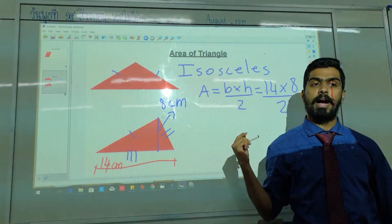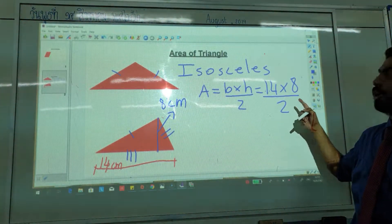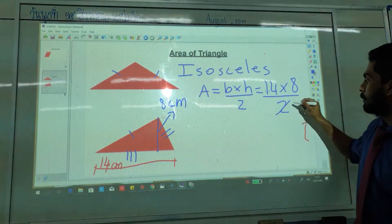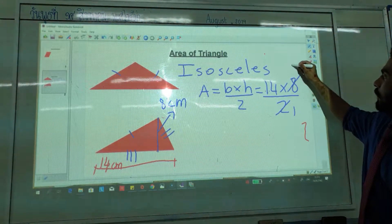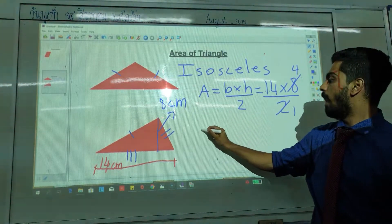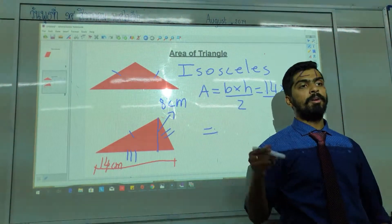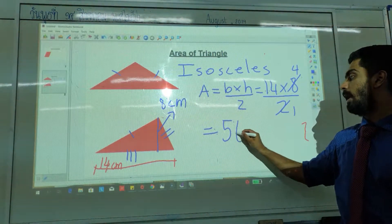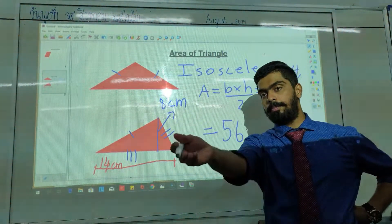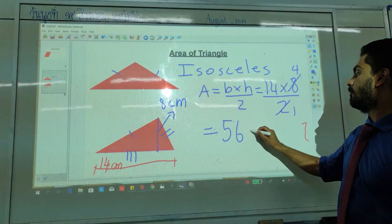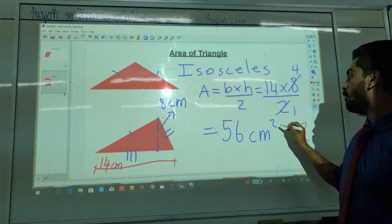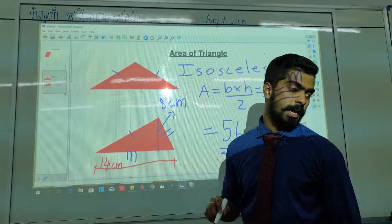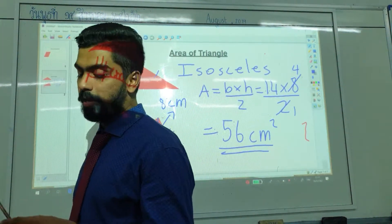Now, can anything simplify? Can 2 and 8 or 2 and 14 simplify? Yes. So 2 will change to 1, 8 will change to 4. What is 14 times 4? 56. And what would be the unit? Centimeter square. Or we can also say it as 56 square centimeters.